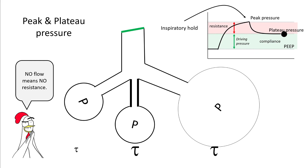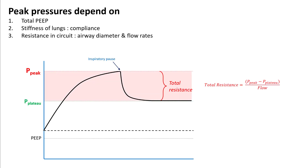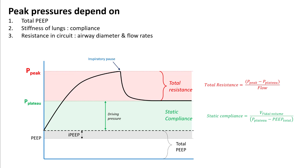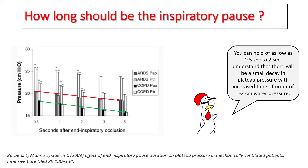When there is no flow, there is no resistance. So the difference between plateau and PEEP gives you the compliance portion of the circuit, and the difference between peak and plateau — where there was flow of air — gives you the resistance of the circuit. Peak pressure therefore depends on three factors: resistance in the circuit, compliance of the system, and how much total PEEP is present.